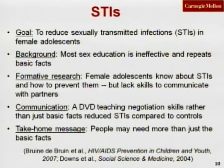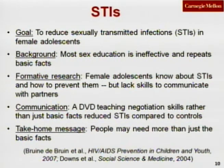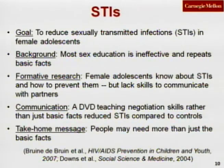When we conducted formative research in the form of interviews with female adolescents, we found that they already knew these things — they knew about sexually transmitted infections, they knew how to protect themselves, and they wanted to protect themselves. But what they lacked were the skills to communicate with their partners about abstinence and condom use. So we did something very different: we developed a DVD that taught female adolescents negotiation skills and how to talk to their partners about sexually transmitted infections and strategies for reducing their risks. We found that our DVD, compared to control materials, reduced sexually transmitted infections in recipients even after six months — probably because we taught them something they didn't know yet but needed to know to make more effective decisions.